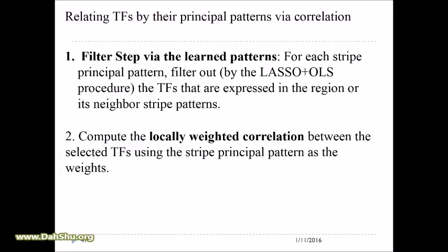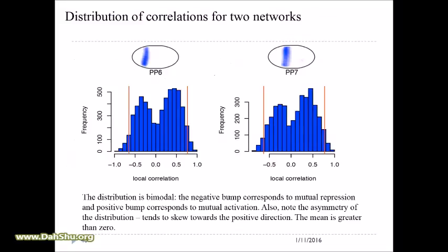The next thing we want to do is go back to the gap gene network to see if we can reconstruct it. What we do is use the principle patterns as a mask — you either threshold it or use the weight in the principle pattern as a weight in Pearson correlation — so you have a local correlation only about that particular principle pattern. This is part of the gap gene network because the stripes are the segmentation patterns.